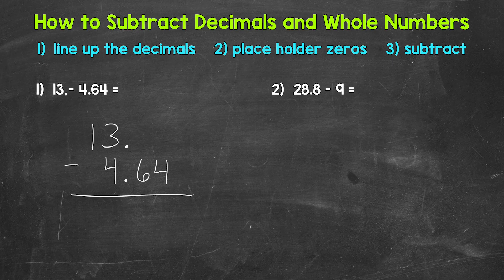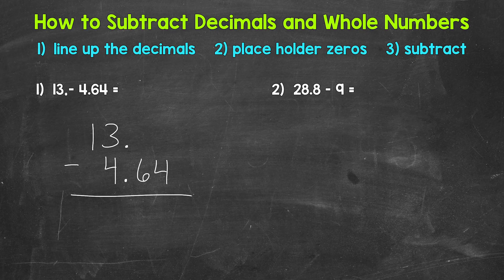At this point, do not just bring the 6 and the 4 straight down into the answer — there are actually zeros above those digits, so we need to go through the subtraction process. The decimals are lined up, but it looks a little offset. We can use placeholder zeros to make this more organized, and we actually need them to subtract. Since 4 and 64 hundredths goes to the hundredths place, we need two zeros here so that 13 goes to the hundredths place as well. Those zeros to the right of the decimal point are not changing the value of 13 — it's still 13.